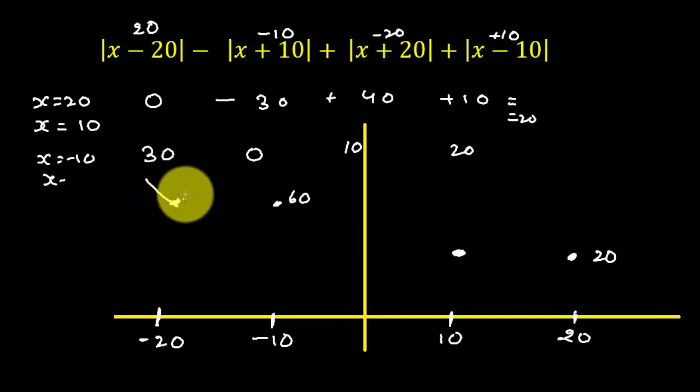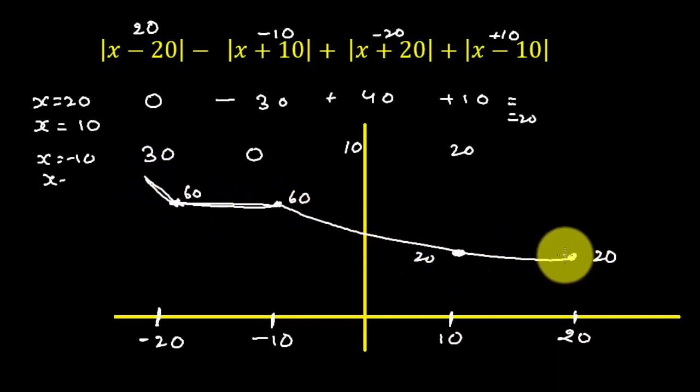So the graph of this function looks like this. The freehand movement graph: 60, then we go to 20, we go to 20 and again upward. This is the graph of this function.